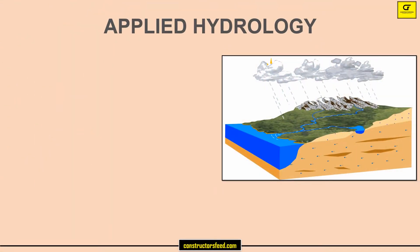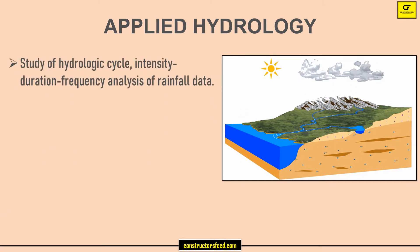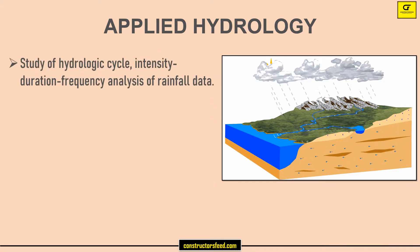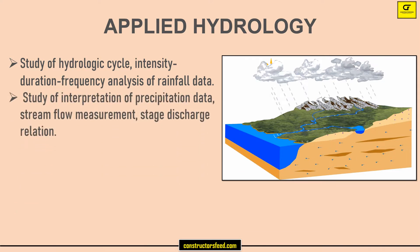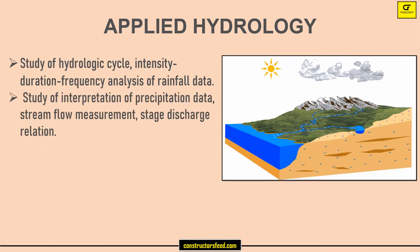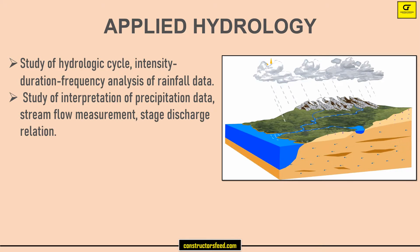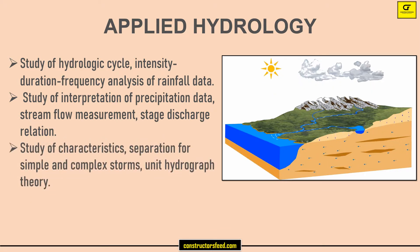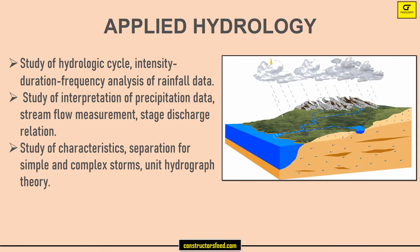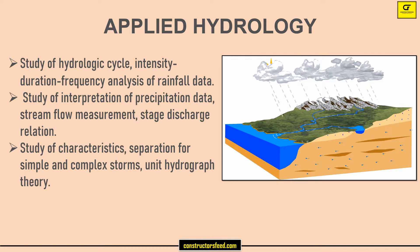Applied Hydrology: study of the hydrologic cycle; intensity-duration-frequency analysis of rainfall data; study of interpretation of precipitation data; stream flow measurement; stage-discharge relation; study of characteristics separation for simple and complex storms; and unit hydrograph theory.